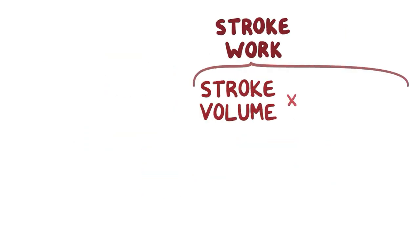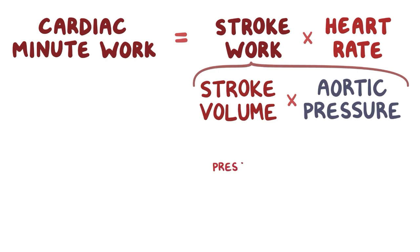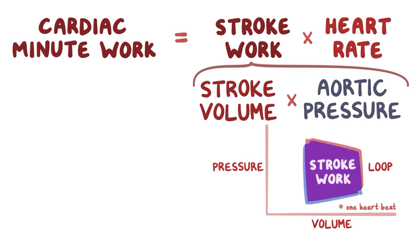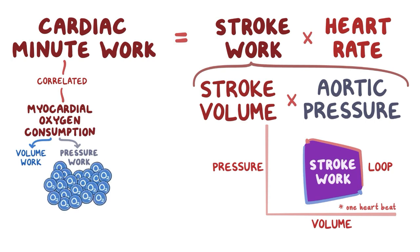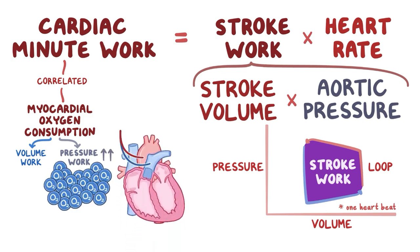As a quick recap: stroke work is defined as stroke volume times mean aortic pressure, and cardiac minute work is stroke work times heart rate. Stroke work is best represented by a pressure-volume loop, and stroke work during one heartbeat is proportional to the area inside the loop. Cardiac minute work is directly correlated to myocardial oxygen consumption and can be divided into pressure work and volume work. Pressure work uses much more oxygen than volume work. In conditions that increase ventricle pressure work, like systemic or pulmonary hypertension, the ventricles adapt by thickening their walls.